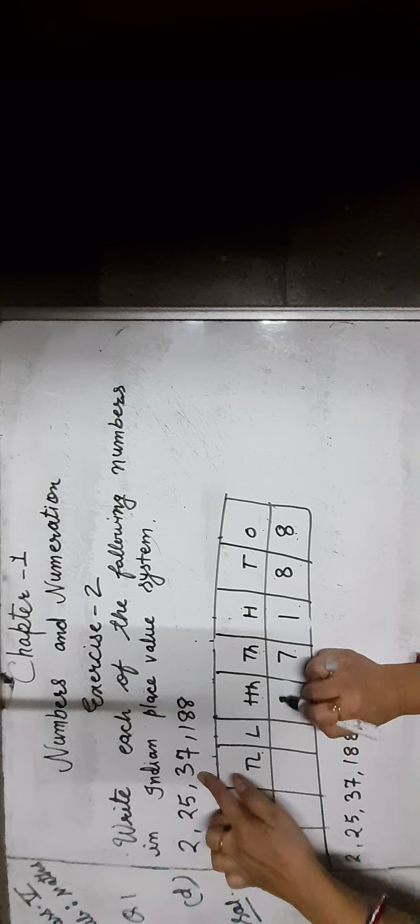The next number is 2,25,37,188. Place the digits: 8 ones, 8 tens, 1 hundred, 7 thousands, 3 ten-thousands, 5 lakhs, 2 ten-lakhs, and 2 crores. As you can see, 2 is in the crore place so we call it 2 crore. 2 and 5 are in the lakh place so twenty-five lakh. 3 and 7 are in the thousands place so thirty-seven thousand one hundred eighty-eight.